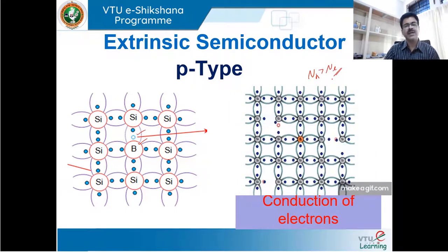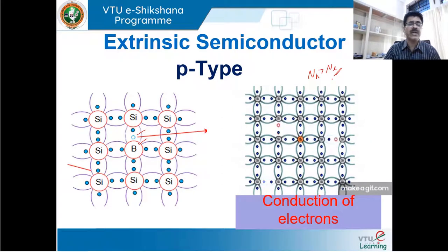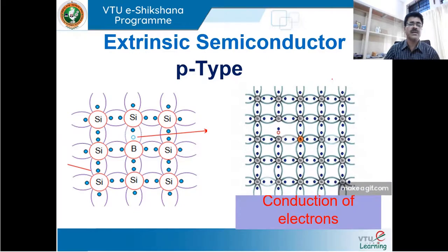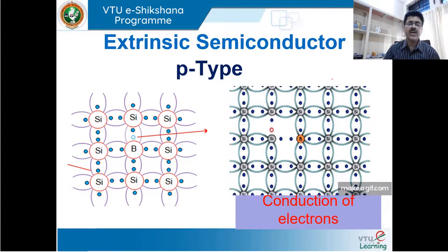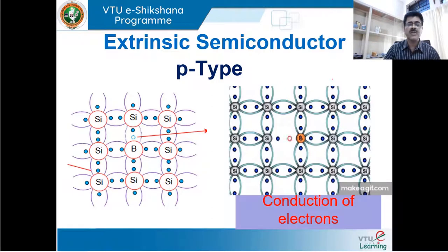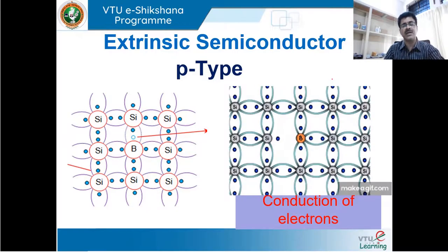In a pure semiconductor material, for every one electron there is a hole created at any given temperature, so you cannot vary the number of electrons and holes independently. But in an extrinsic semiconductor, you can either increase the number of electrons or increase the number of holes. Based on the hole concentration or electron concentration, conductivity can be controlled in a better manner, and that is why extrinsic semiconductor materials are more popular.